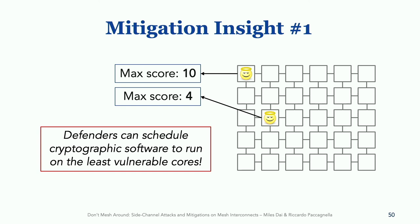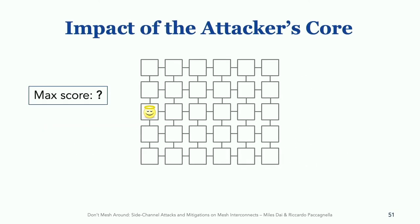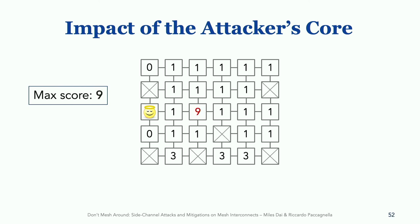We can even do better. To introduce the second mitigation, consider a scenario where the victim runs on the third row of the first column. We can ask: what is the best placement for the attacker? In this plot, we show the best scores that the attacker can achieve across all 23 cores available on our processor. The best score here is nine, when the attacker runs on the third row of the third column. However, notice that there is only one core where the attacker can really achieve this high score.